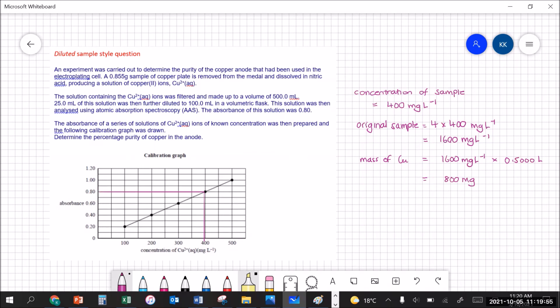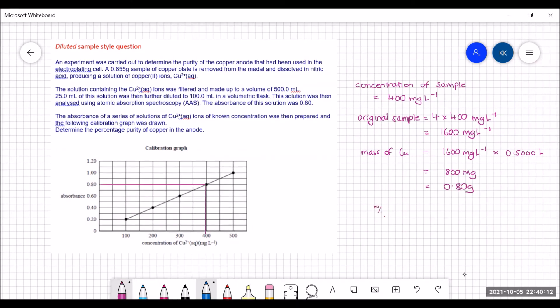Expressing that to the correct number of significant figures because our 0.80 had two significant figures for the absorbance we can say this is 0.80 grams. But our question didn't ask us to find the mass of copper it asked us to find the percentage purity. So to calculate our percentage purity we need to take our 0.80 grams and divide it by 0.855 grams and multiply by 100 to get 94 percent.